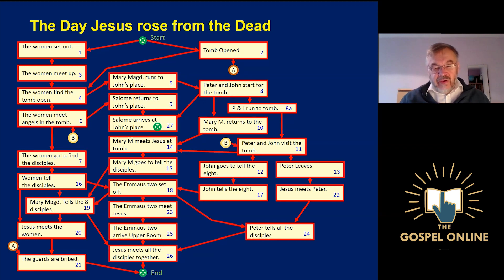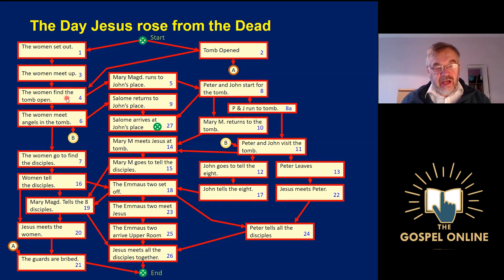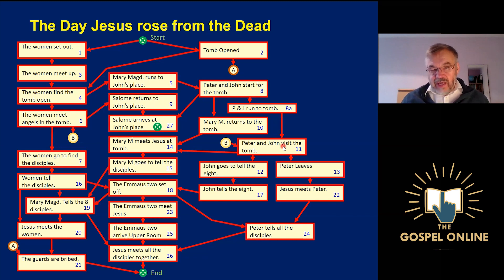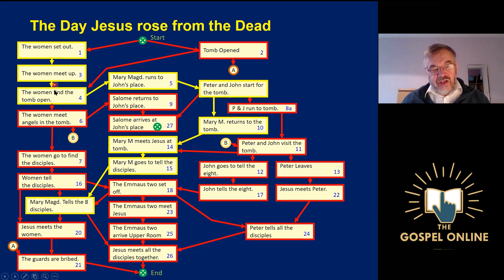You can draw out those incidents into a chart, and from that you can start to work out the sequence of operations. The arrows show what happens before and after each event. For example, Peter and John start off to run back to the tomb after Mary Magdalene comes and tells them the tomb has been opened and the body of Jesus is gone. They set off before Salome arrives back at their house and before Mary Magdalene sets off herself. They run to the tomb and finally go into it and see what's there. In yellow is Mary Magdalene's movements through that sequence of events.